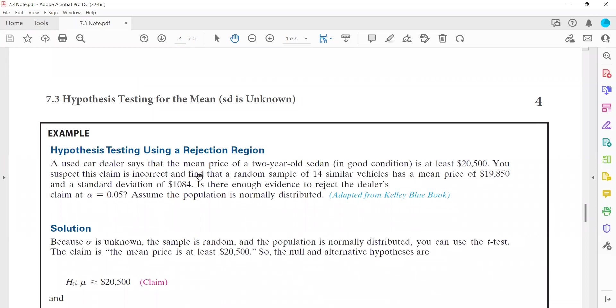As a statistician, we're going to randomly select 14 similar vehicles and calculate the mean and the standard deviation of your sample. The mean price of the sample is $19,850 and the standard deviation is $1,084.